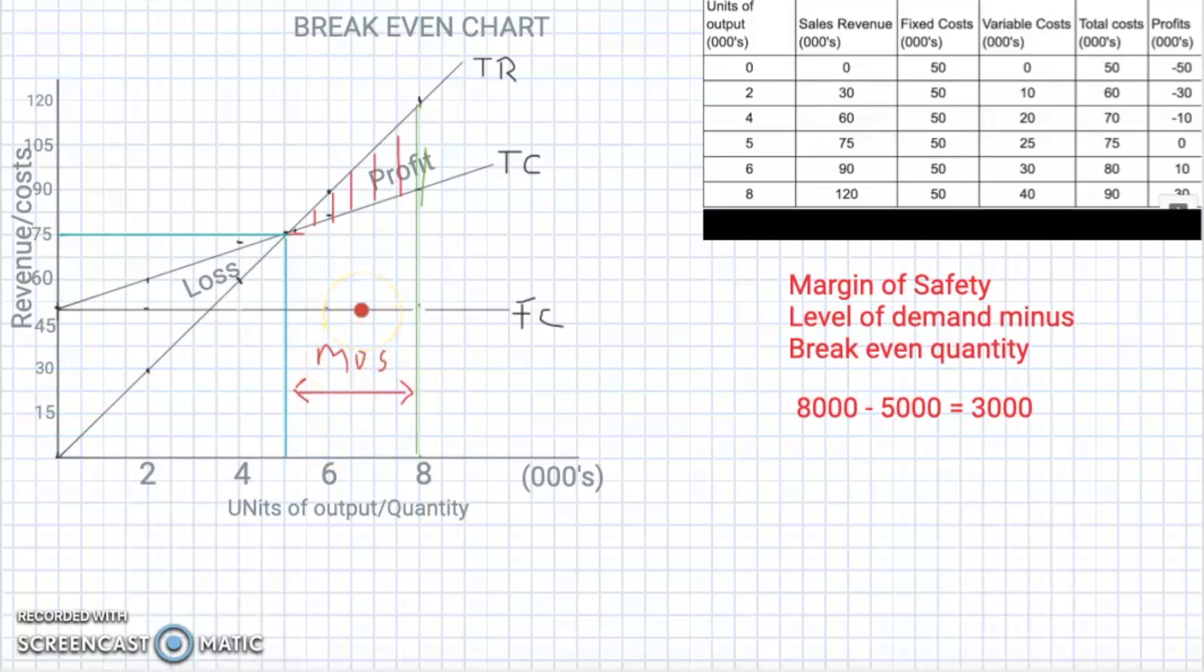It's a simple concept, because once you know that the profit is anything above the break-even point, then that's where the margin of safety will be. So margin of safety is really the level of demand minus the break-even quantity.